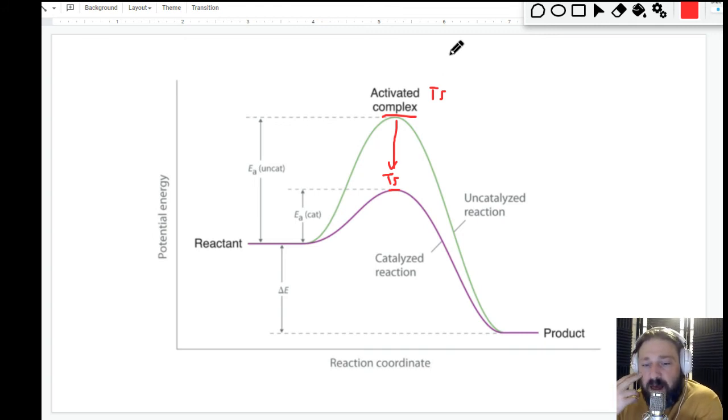So this is what a catalyzed reaction looks like. What you're doing is lowering that activation complex, or perhaps you're making it to where the steric hindrances, the orientation of the molecules, are put up just the right way. There are some biological catalysts called enzymes. If you have taken AP Bio, you'll know all about enzymes.